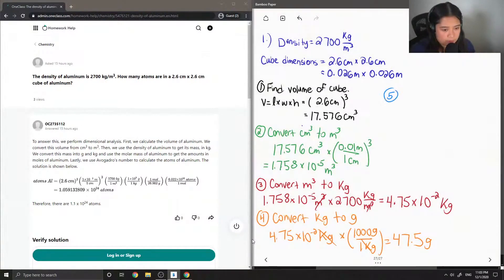So step five is to find the number of moles. Let's recall that number of moles is equal to mass over molar mass. So the mass is what we found in the previous step, which is 47.5 grams. And the molar mass is the molar mass of aluminum. If you go to the periodic table, you find it has an atomic mass of 26.982 grams per mole. So if we divide this out, we end up getting number of moles of 1.76 mole.